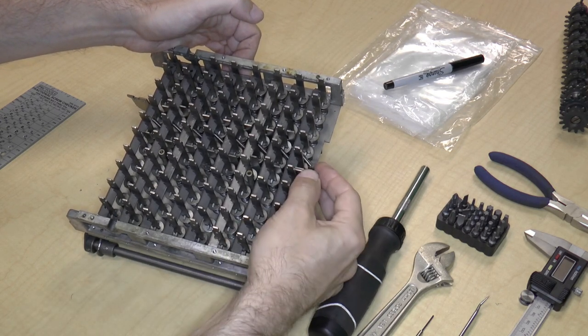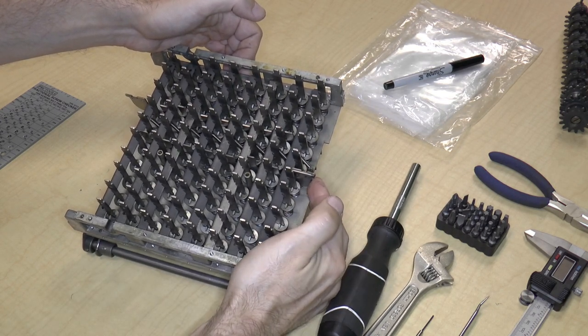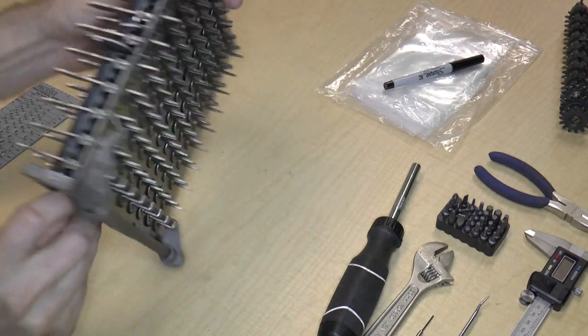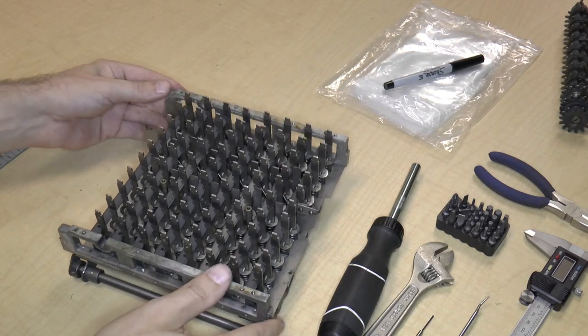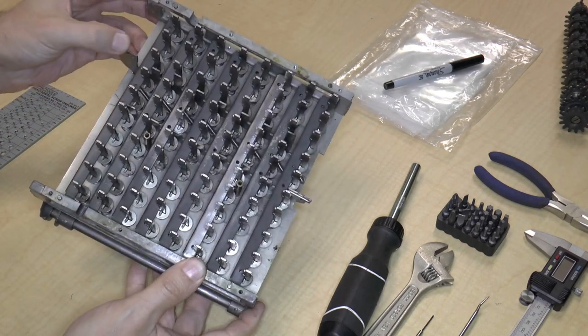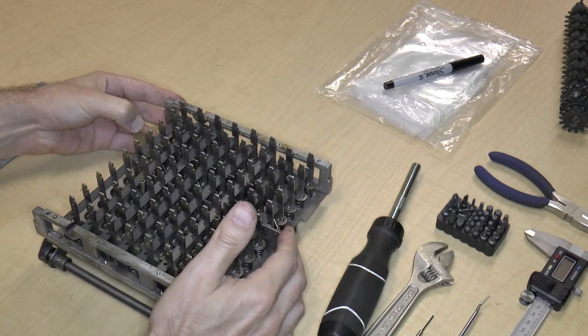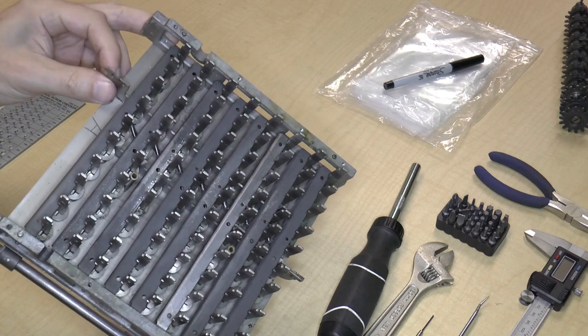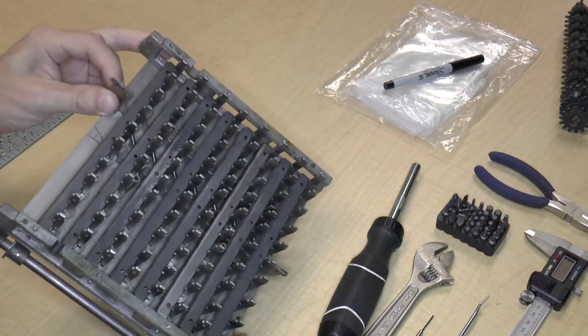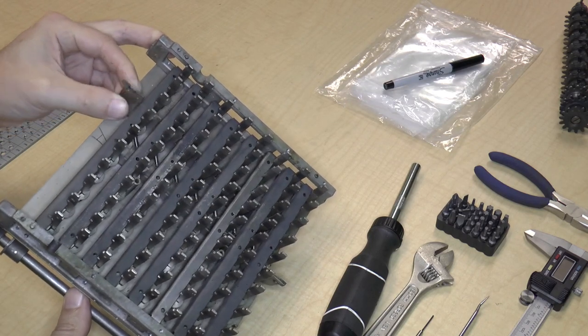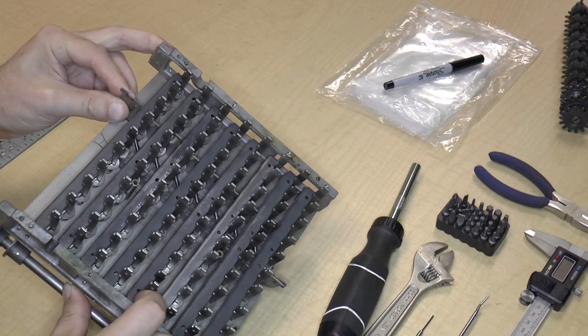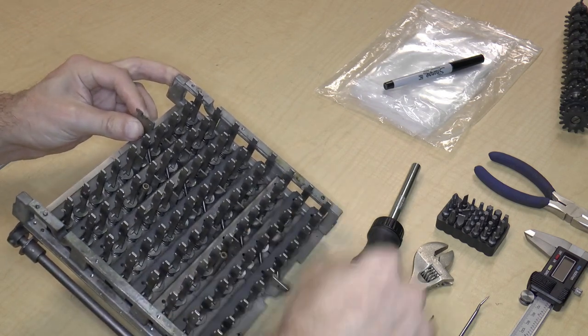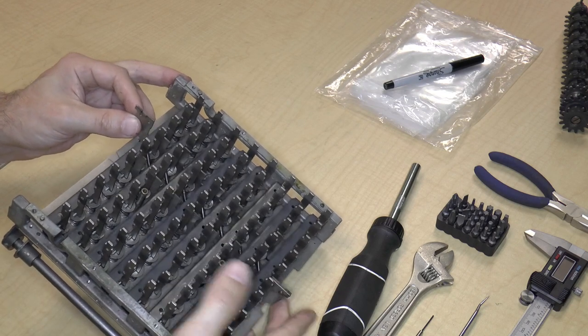The way that's done is there is a spring-loaded bar that goes all the way across that releases those keys. There's also what I think is a locking mechanism. When it's pulled, you can press down a key and zero it out. But when it's pushed over on this side, you can press a key but you can't zero it out. I think that's part of the repeat mechanism so you can keep adding and the keyboard doesn't reset itself.